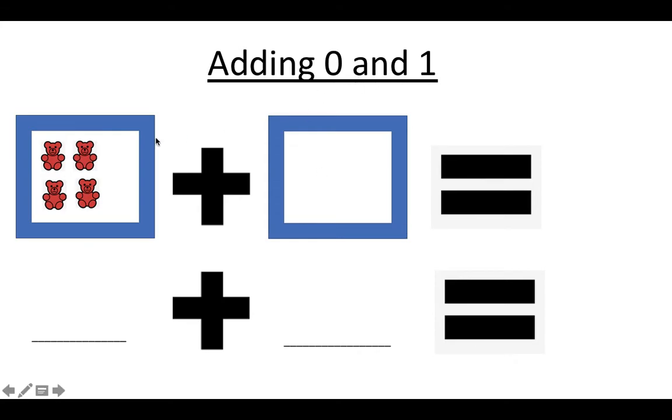As you can see on my screen here, I have four red teddy bears. If I start with four red teddy bears and I add zero more teddy bears, how many teddy bears do I still have? I still have four teddy bears. Anytime you add zero to a number, that number doesn't change. It's not getting any bigger. It's staying the same. Four plus zero equals four.